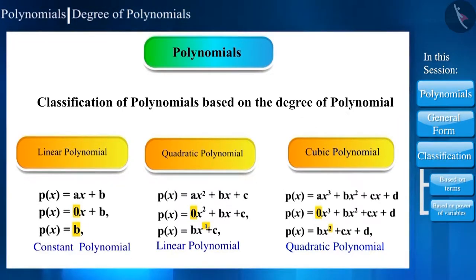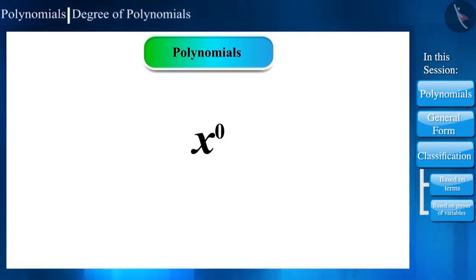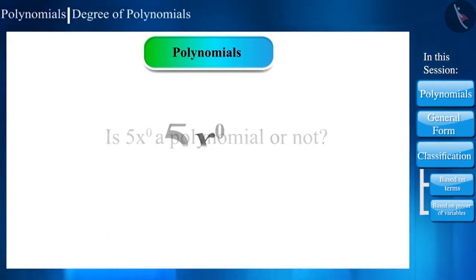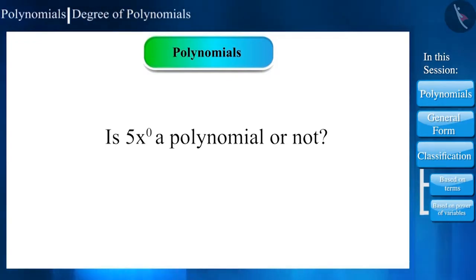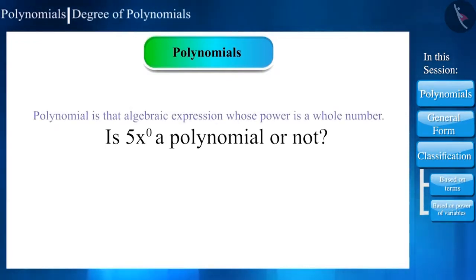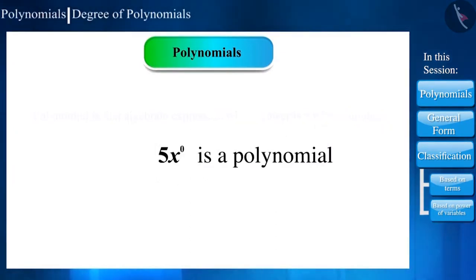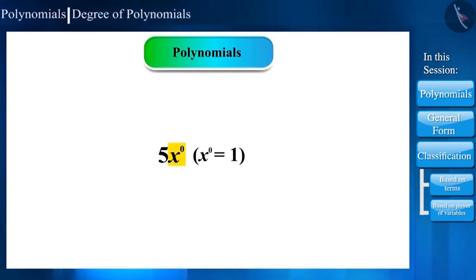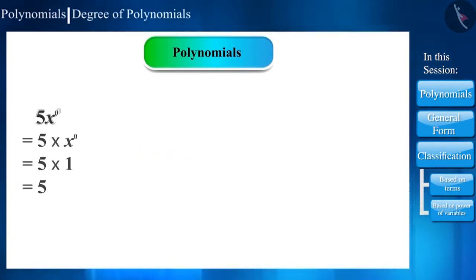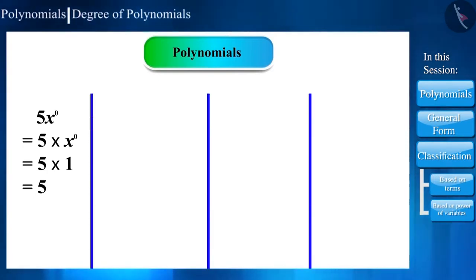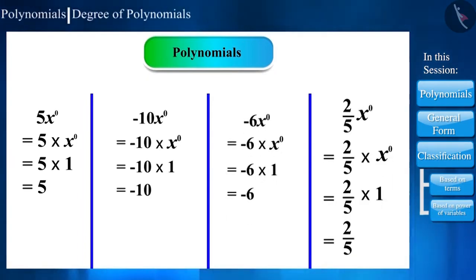Suppose there is an expression whose power is 0, for example 5 times x to the power of 0. Would it be a polynomial? We should focus on the definition: if the power of any expression is a whole number, it is a polynomial, and 0 is a whole number. The value of 5 × x⁰ equals 5 × 1 = 5, meaning any constant number can be written as a polynomial with power 0. These are called constant polynomials.